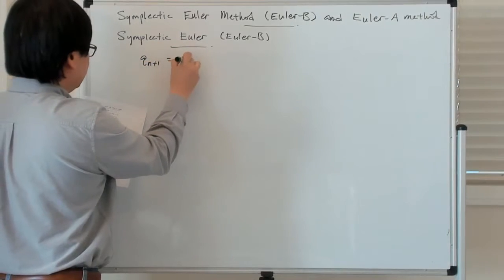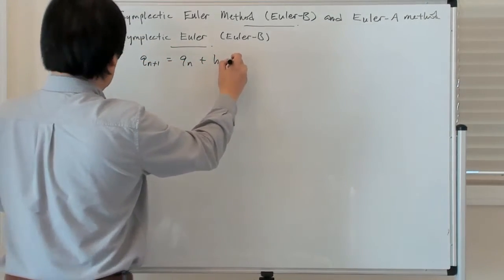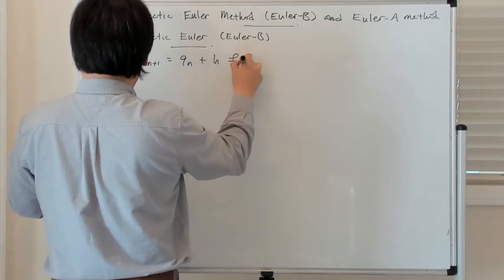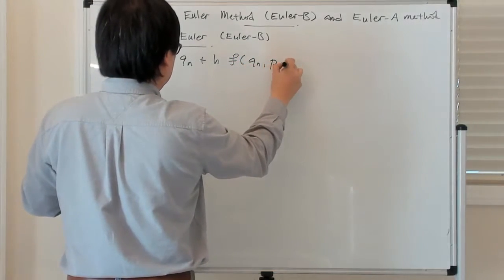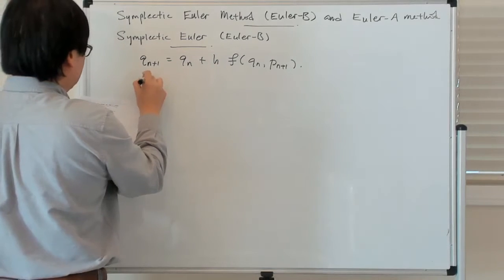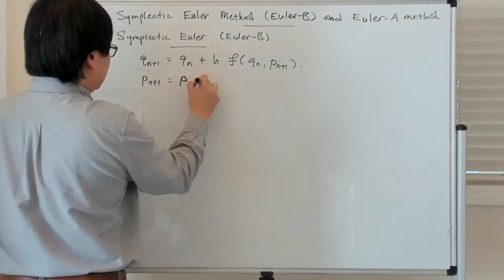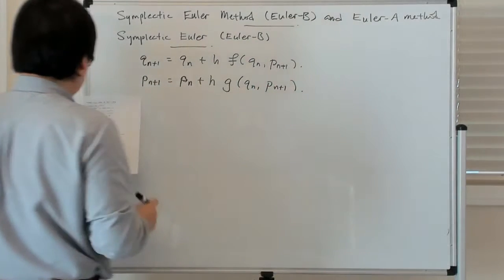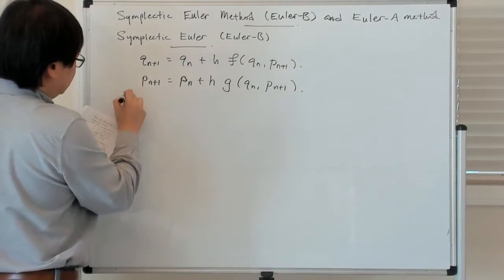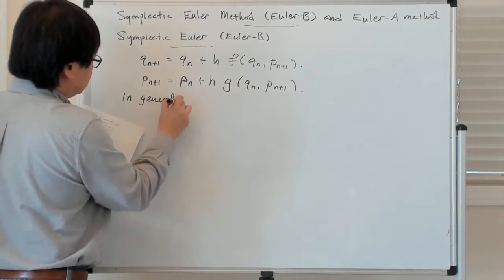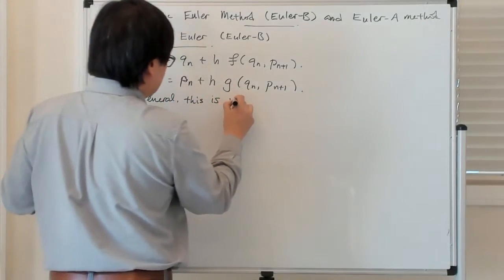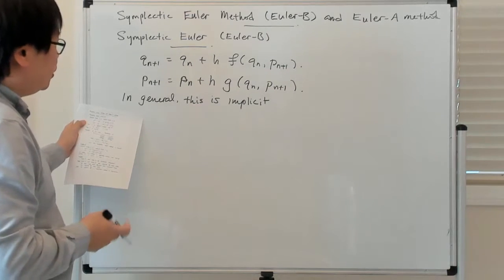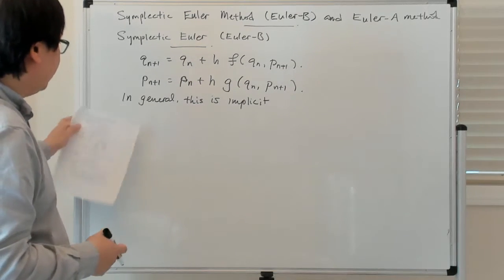So you have Q_{n+1} equal to Q_n plus H times F of Q_n, P_{n+1}, and then P_{n+1} is equal to P_n plus H times G at Q_n, P_{n+1}. In general this is an implicit method, which basically means that you typically have to solve this as a system of nonlinear equations, possibly with Newton's method or some sort of fixed point iteration scheme.